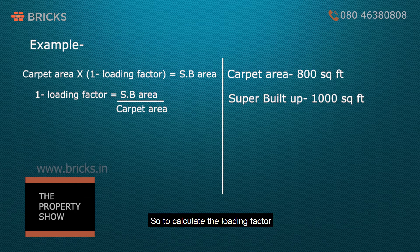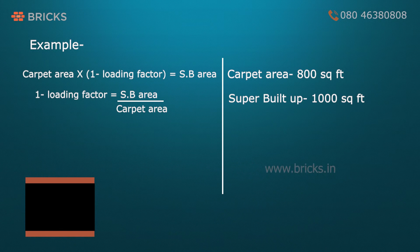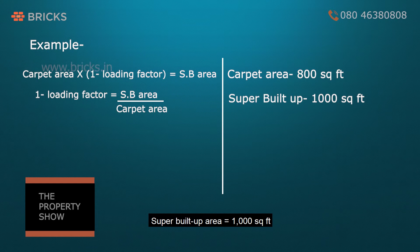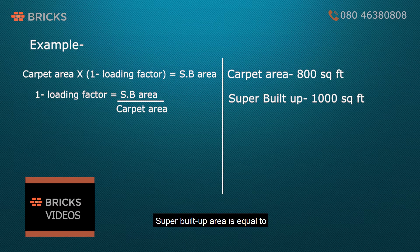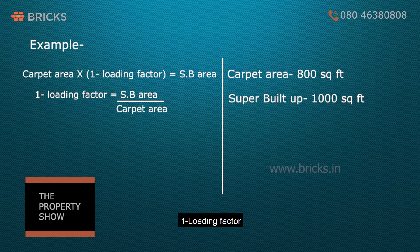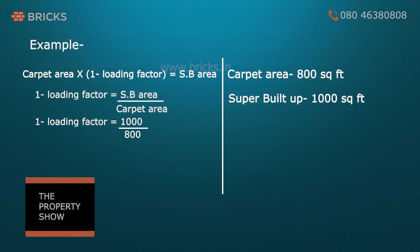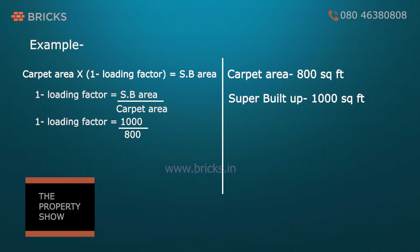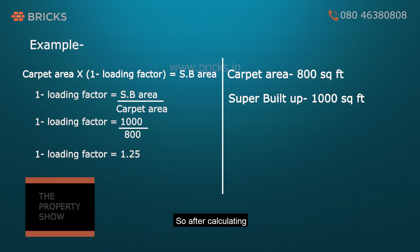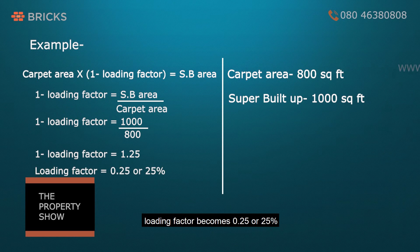To calculate the loading factor: super built-up area = 1000 sq ft, carpet area = 800 sq ft. Using the formula: super built-up area = carpet area × (1 + loading factor), after calculating, the loading factor becomes 0.25, or 25% in this example.